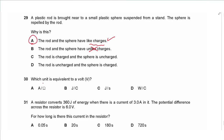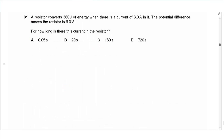Question 30: which unit is equivalent to a volt? A volt refers to potential difference, which is energy per unit charge, so the unit is joules per coulomb (J/C). The answer is B.